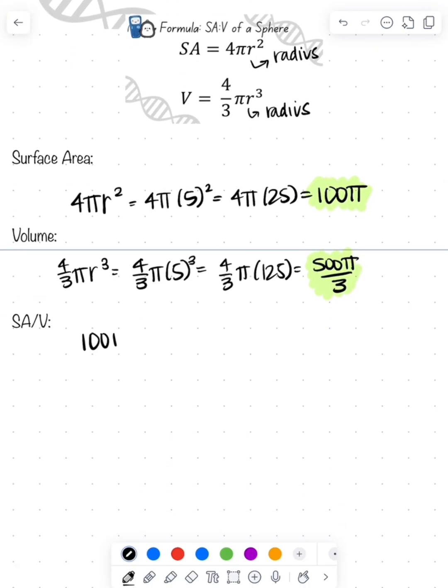So now surface area to volume ratio, we do the surface area divided by our volume. Whenever you are dividing by a fraction, you just multiply by the reciprocal, so 100π times 3 over 500π.